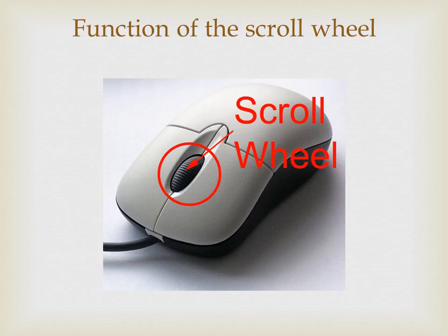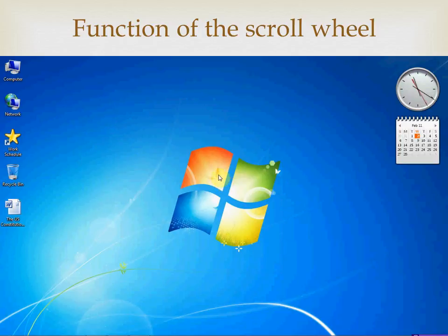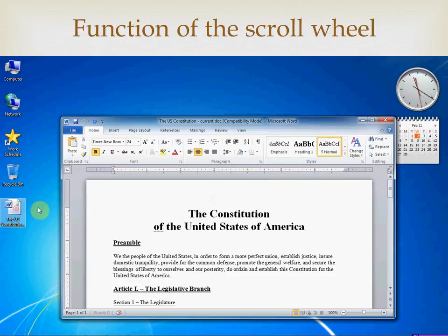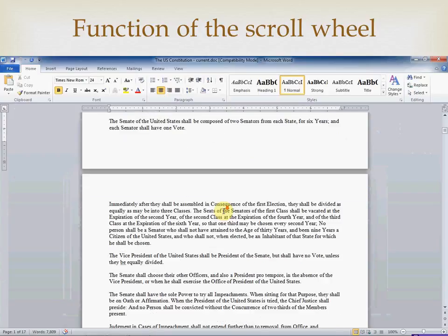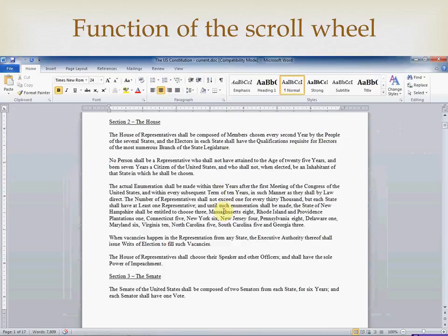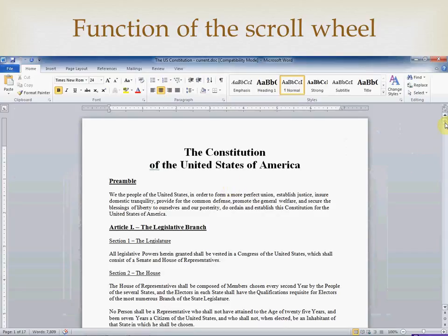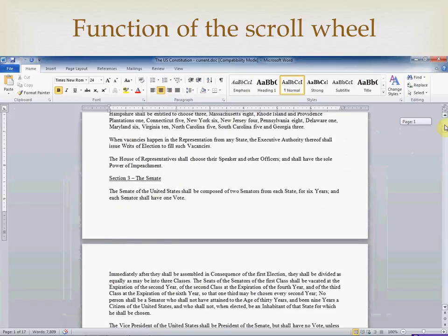There is one more feature available on the modern computer mouse, and that is the scroll wheel. This wheel can be used to roll pages up and down in many different applications, especially in documents or on websites. Let me demonstrate by opening a Word document. With the document open, all I have to do is roll the wheel toward me and the page scrolls down. Conversely, by rolling the wheel away from me, the page scrolls up — much easier than having to go to the side of the screen to grab the elevator and move it up or down.